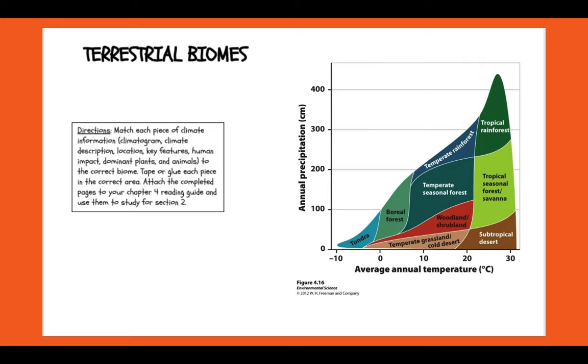So what you guys have, you have these terrestrial biomes. And you're going to take this climograph data that you're going to figure out. And what you're going to do is you're going to take that and match up the key features, the human impact, the plants and animals that you would find in that region. And that will be your notes for this unit.